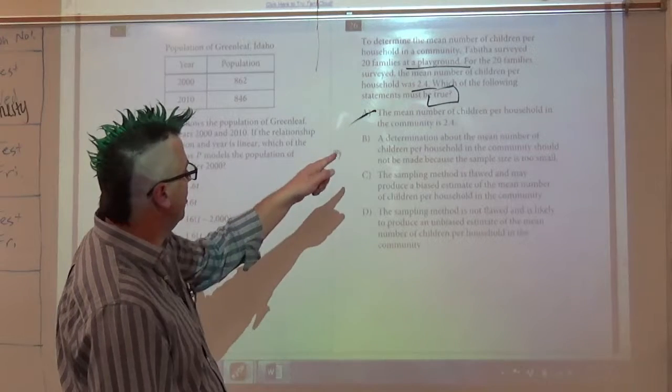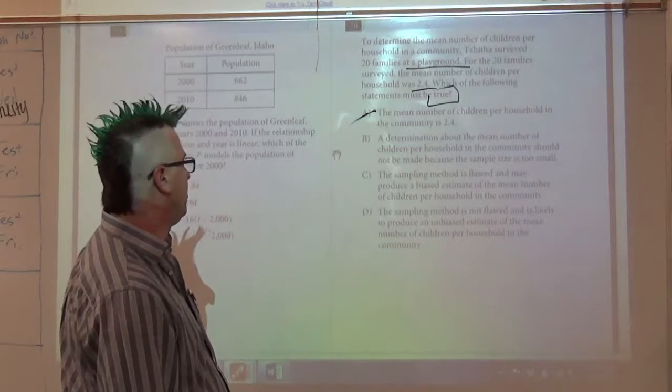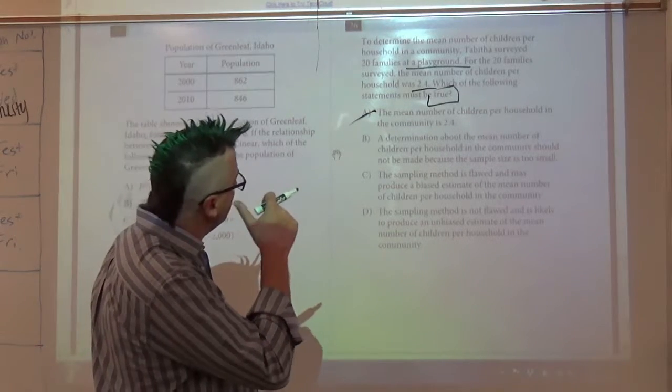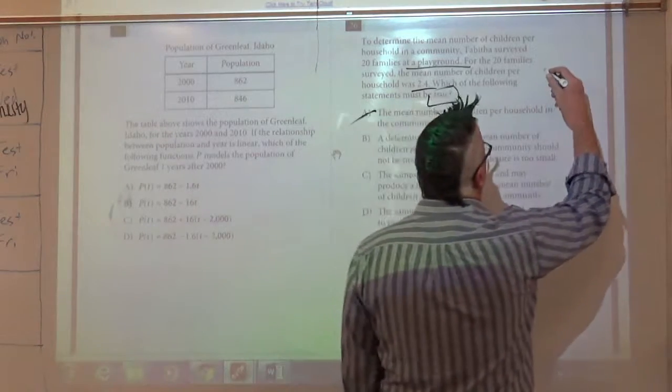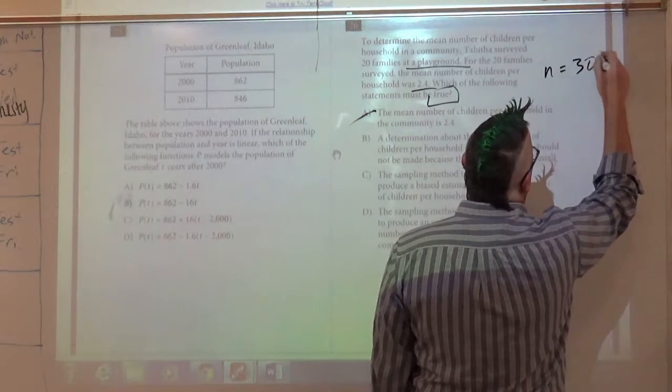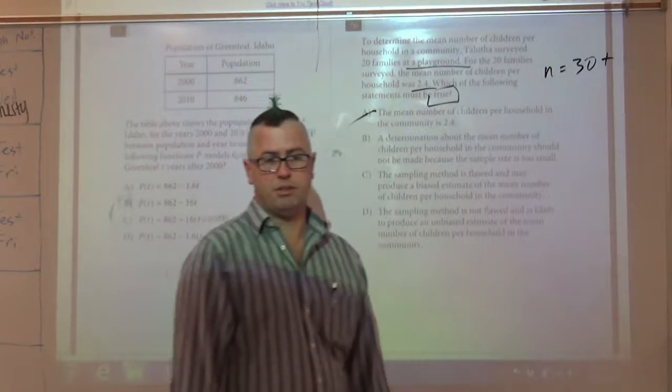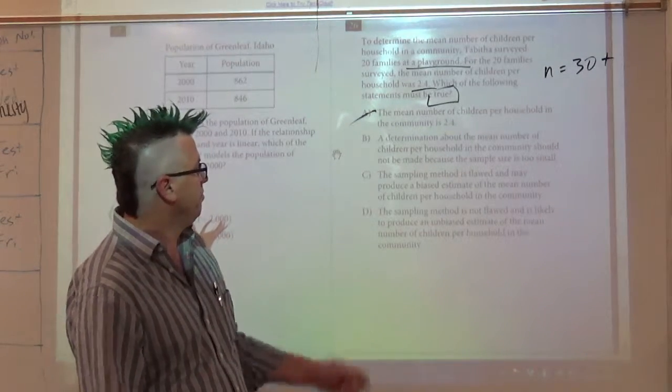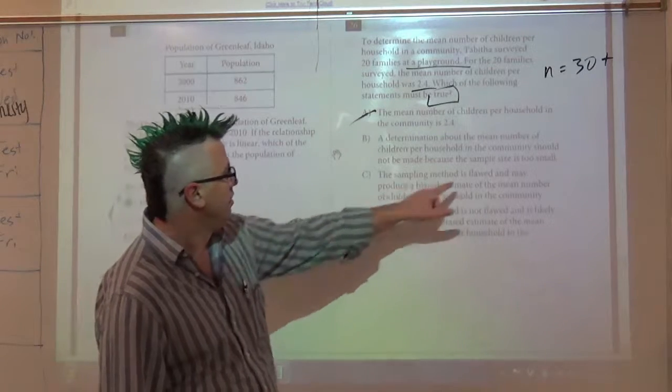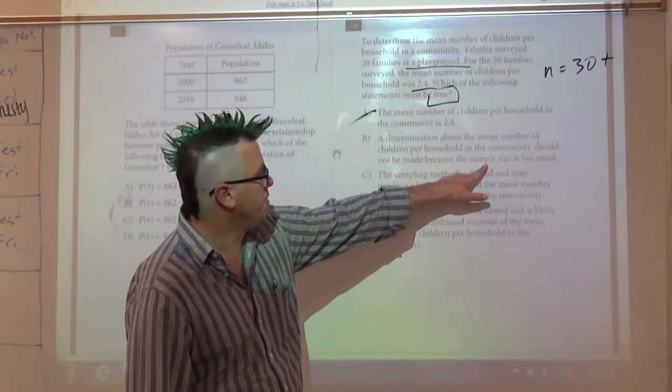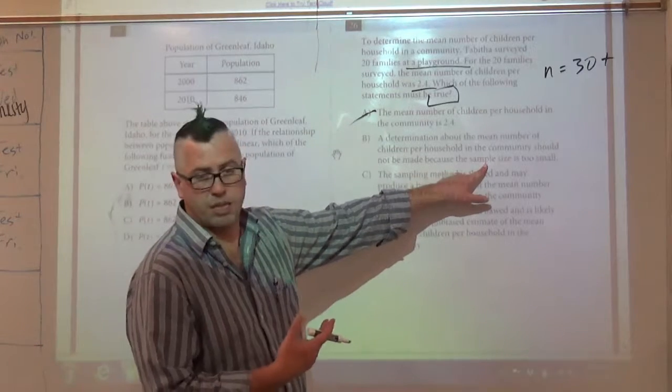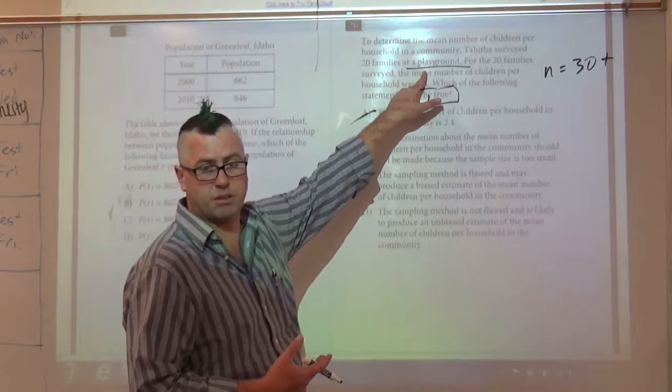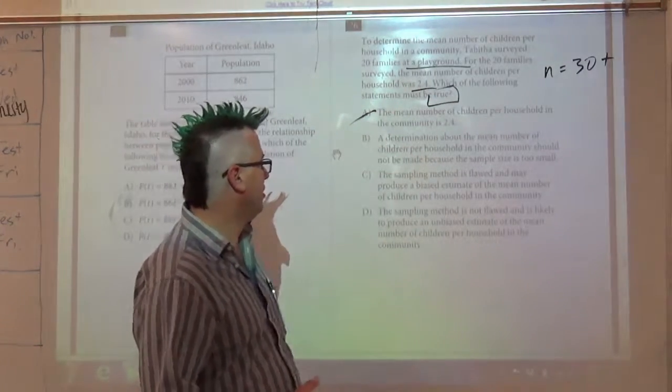Not that one. B: A determination about the mean number of children per household in the community should not be made because the sample size is too small. In a sample size, usually you want 30 or better. Anything under 30 is considered a small sample size. However, not only is the sample size too small, but these people weren't randomly selected. They were chosen because they were at the playground. So maybe, but I don't like it 100%.